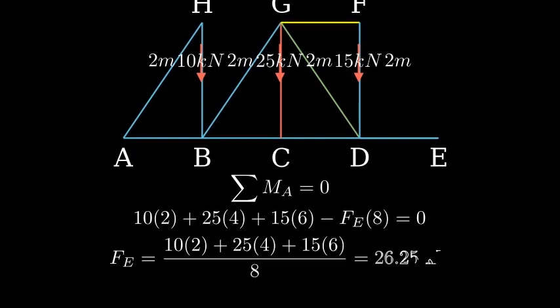Solving for Fe, we get 26.25 kilonewtons. Now, let's analyze joint D. Here we have three forces: the known load of 15 kilonewtons down, the force in member GD, and the force in member CD.